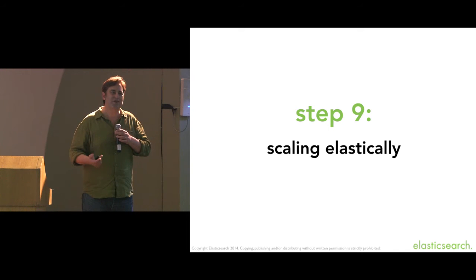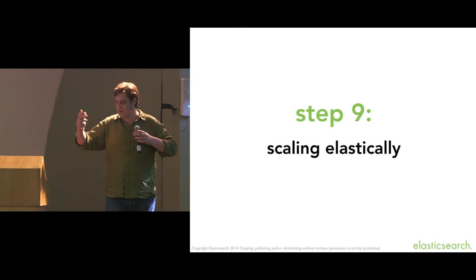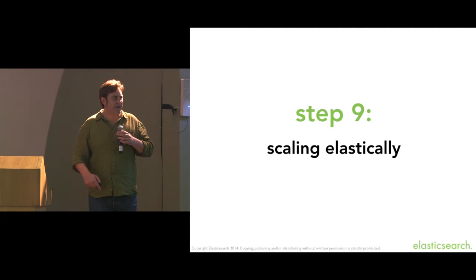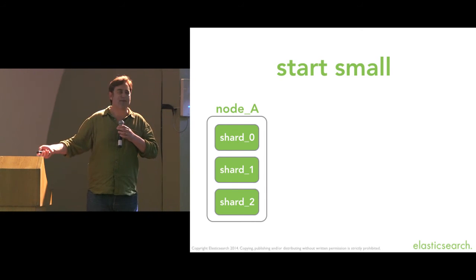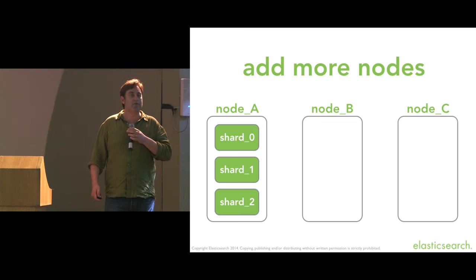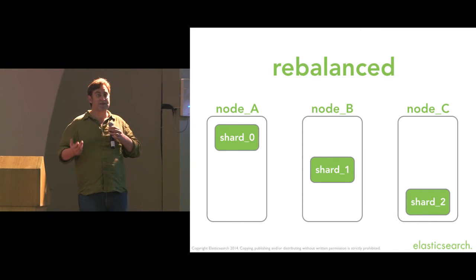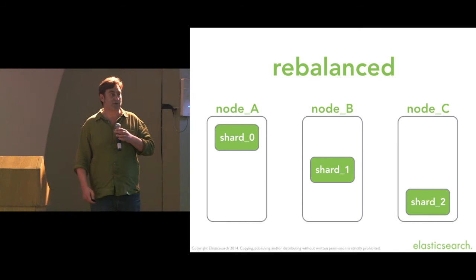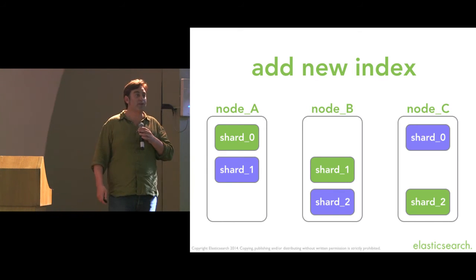You don't know how many nodes you want to run — perhaps you're starting small now, but later you've got plans to get to 1,000 nodes. Shards allow you to start small by over-allocating — putting more shards on a single box than you actually need. Later, when you add more nodes, those shards will automatically migrate to balance out the cluster and take advantage of the extra hardware. And you can create multiple indices, which will just be distributed across the nodes you have at the time.